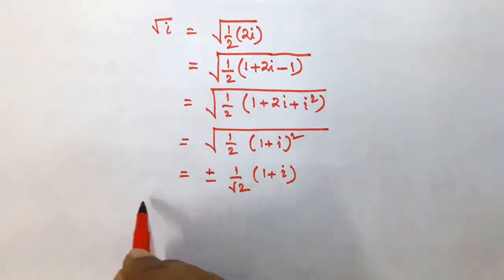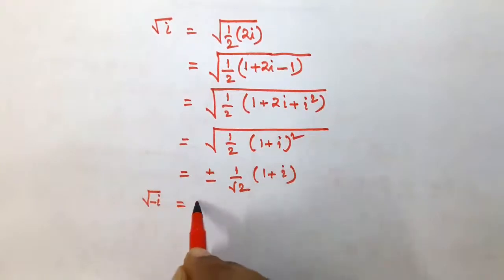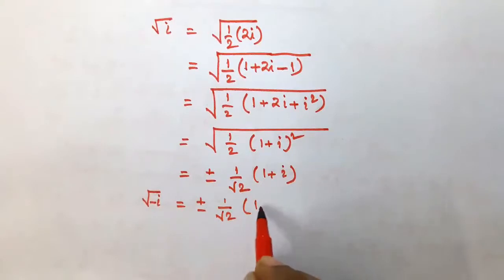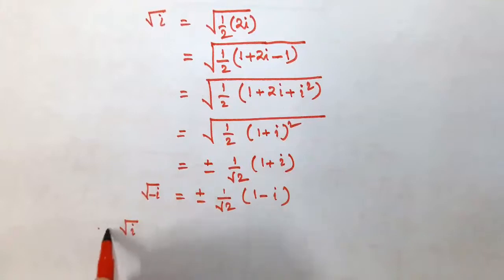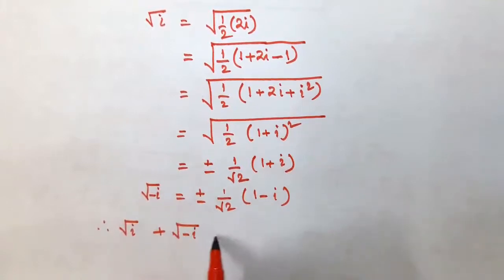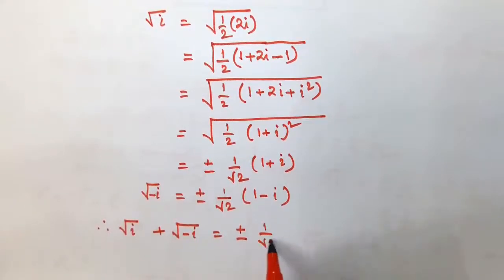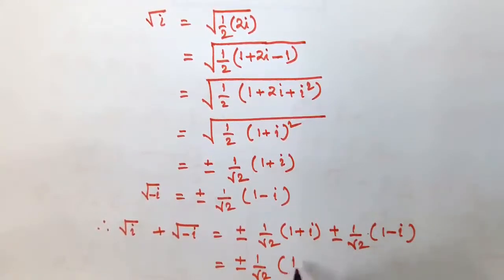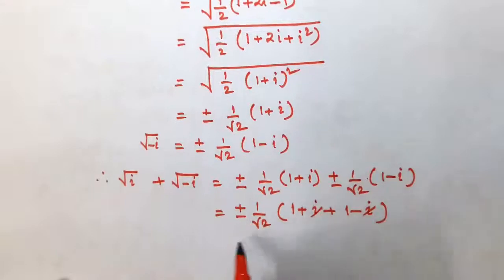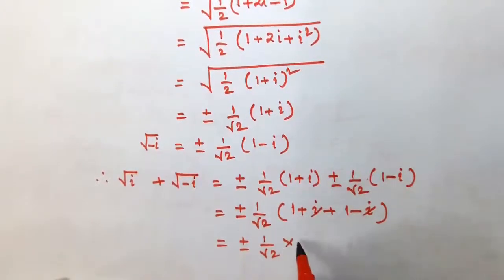Similarly, root minus i is equal to plus or minus 1 by root 2 into (1 minus i). Adding both of them, root i plus root minus i is equal to plus or minus 1 by root 2 into (1 plus i) plus plus or minus 1 by root 2 into (1 minus i). Taking out plus or minus 1 by root 2, and canceling both i's, we find 1 by root 2 into 2, which is equal to plus or minus root 2.